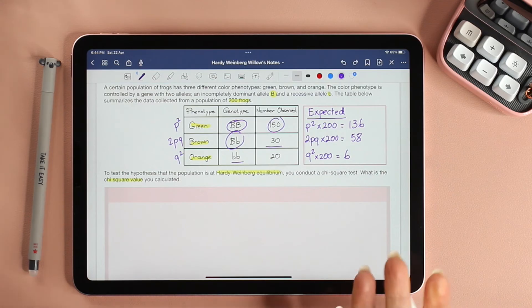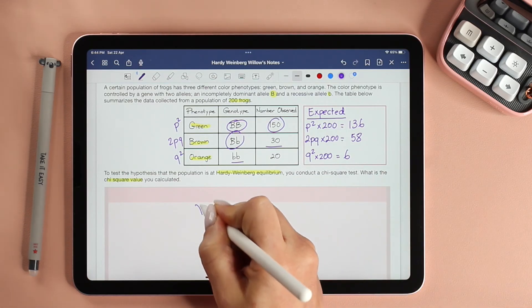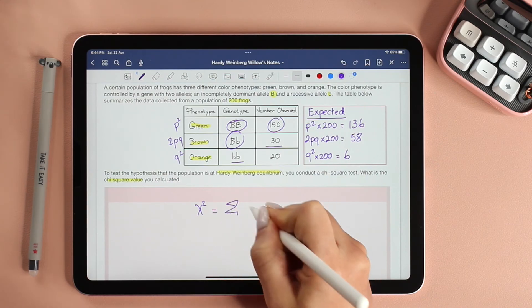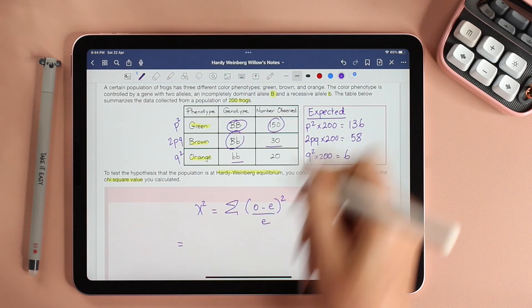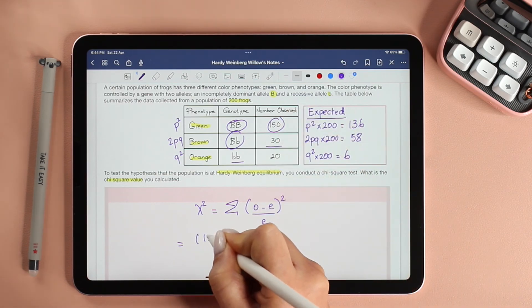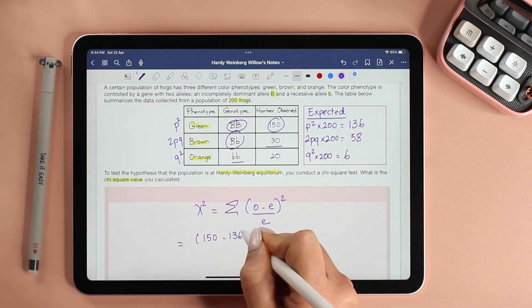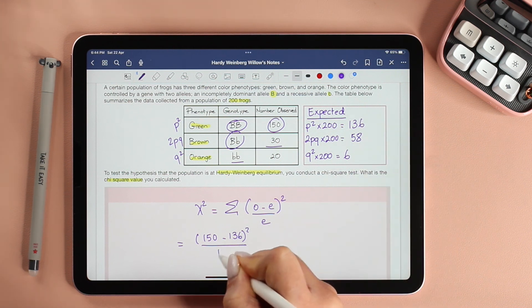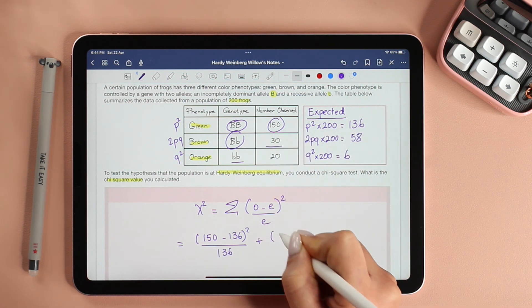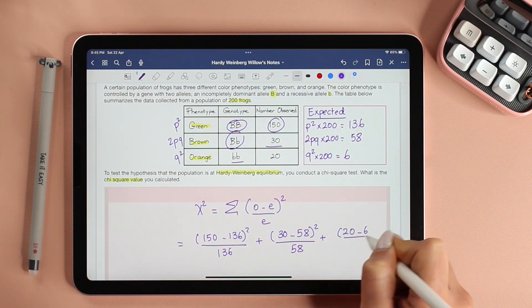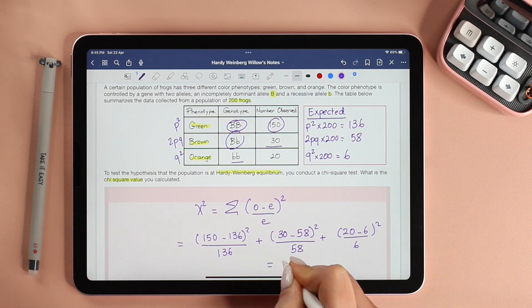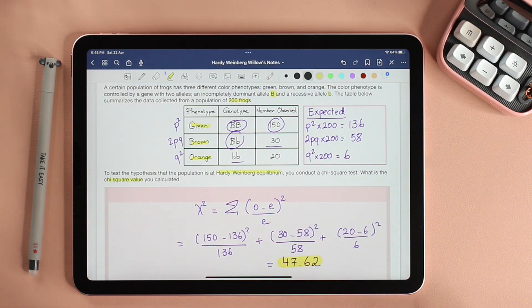Now that we have all the expected values, all we need to do is apply the chi-square formula, which is chi-square equals the sum of (observed minus expected)² divided by expected. So I'm just going to substitute all the values. We have 150 minus expected, which is 136, square that, divide that by the expected, 136, and do it for all the values, which means 30 minus 58. And at the end, this will give us a value of 47.62. And that right there, 47.62, is our chi-square value and is the answer to our question.